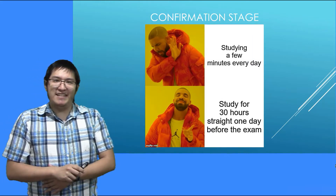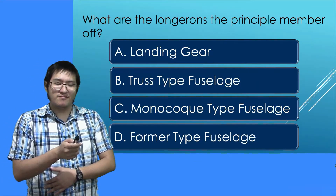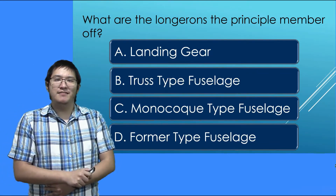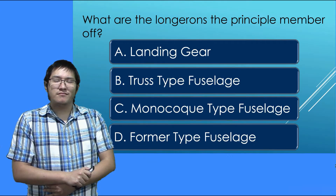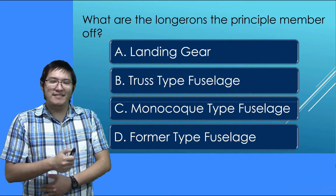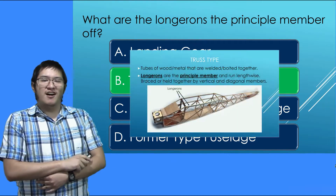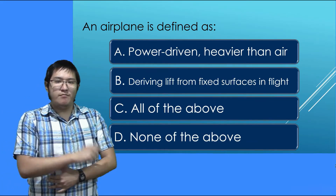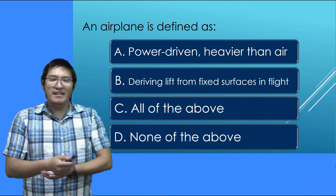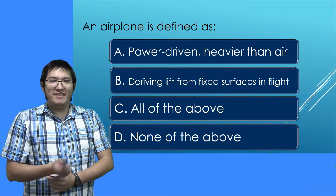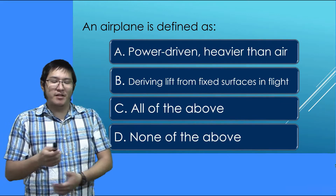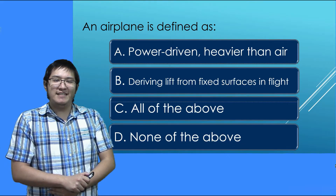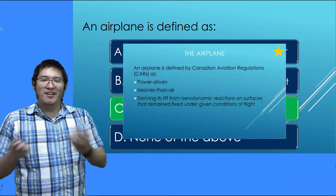Confirmation stage. What are the longerons the principal member of? The answer is: the truss type fuselage! Next question: an airplane is defined as — A, power-driven, heavier than air; B, deriving lift from fixed surfaces in flight; C, all of the above; or D, none of the above. And the answer is C, all of the above.